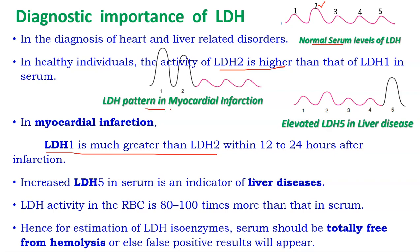During a heart attack, LDH1 levels increase dramatically within 12 to 24 hours — this is the diagnostic importance of LDH1 for myocardial infarction. Additionally, increased LDH5 in the serum indicates liver diseases. The pattern is: normal individuals show LDH2 highest; heart attack patients show LDH1 highest; liver disease patients show LDH5 highest.